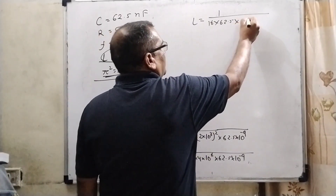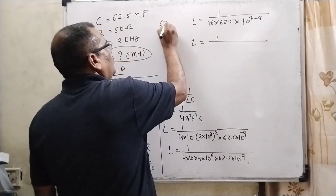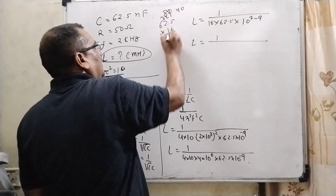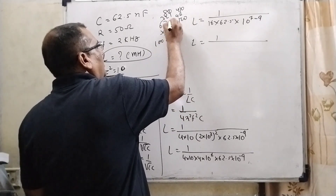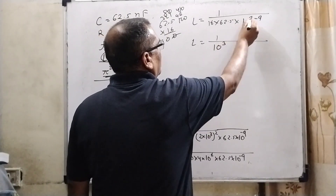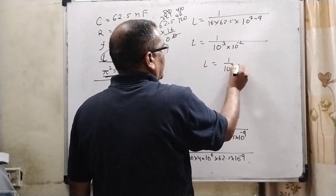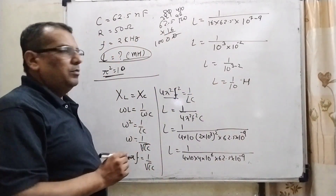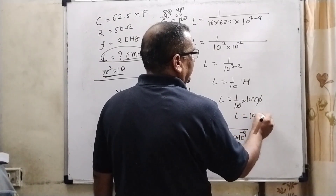Simplifying: L equals 1 upon (62.5 × 16 × 10⁻³). Now 62.5 × 16: 16 × 80 = 1280, 16 × 32 = 512 — carrying through gives 1000. So L equals 1 upon (1000 × 10⁻³) = 1 upon 10 to the power zero... giving L equals 1 upon 10 Henry. But we need the answer in milli-henry, so multiplying by 10³ gives L equal to 100 milli-henry.